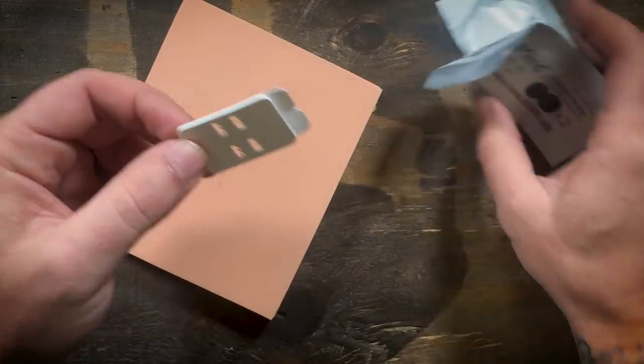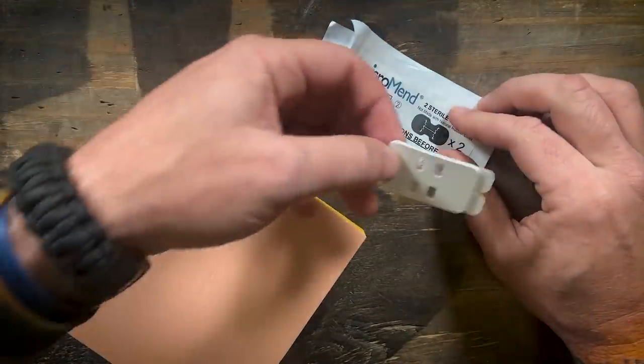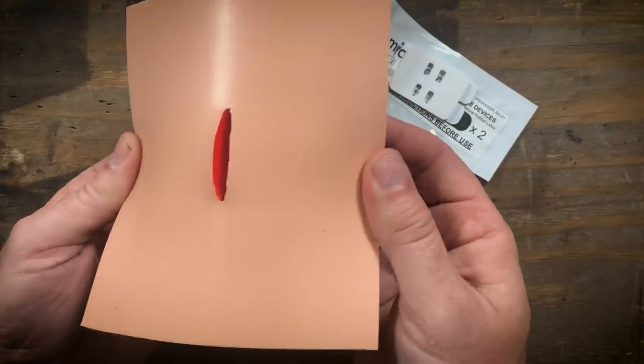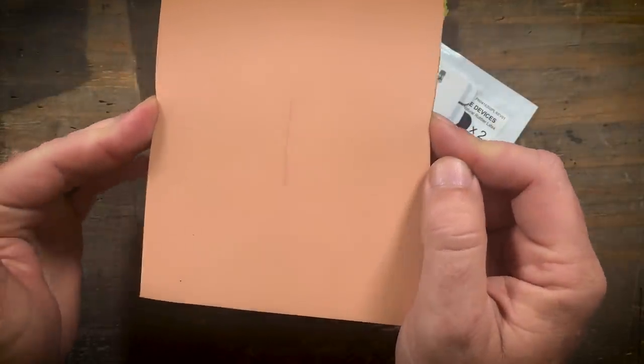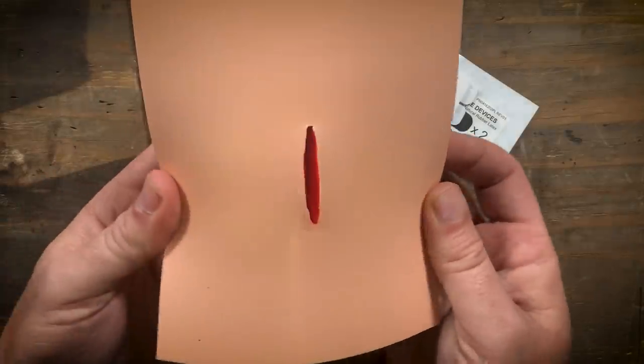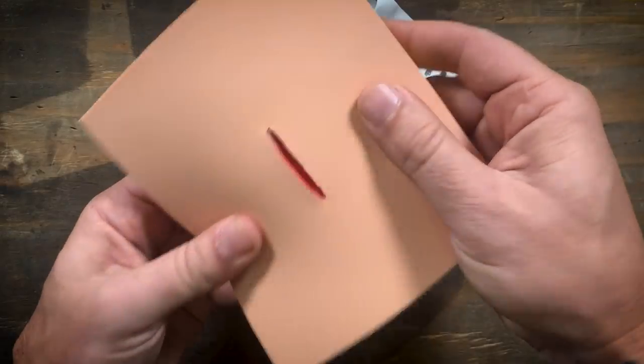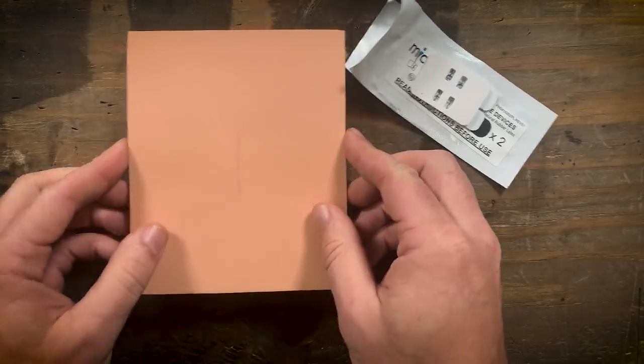So you got yourself a cut. I'm going to set this on the package. So you got yourself a good size cut right there and you want to close that up. Typically you might need stitches for something like this. So I'm going to show you how this works.